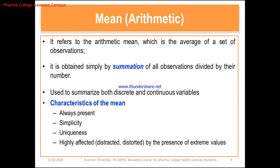One peculiar feature not seen in other measures of central tendency is that the mean can be highly affected or distorted by extreme values — both the largest and the smallest. The mean can be pulled toward the largest number. Mean cannot be used when the data is not normally distributed; if the data is not normally distributed, it is not possible to summarize the data using the mean.